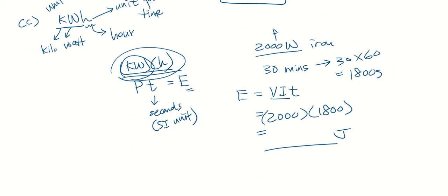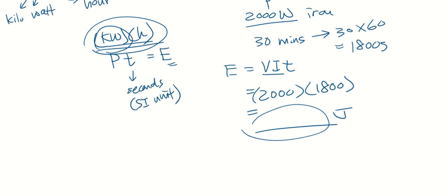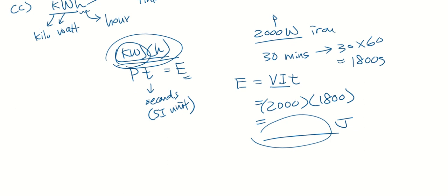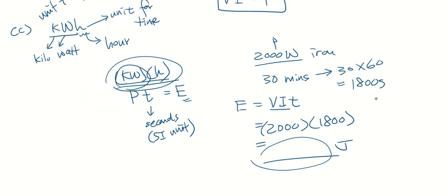So it will be 2000 multiplied by 1800 seconds, and I'll get this very large number in joules. But imagine this big number is presented to your parents, they'll be very alarmed. They'll say, hey, why do we have so much energy? So instead, what we should do now when calculating cost of electricity, we must convert it to kW.